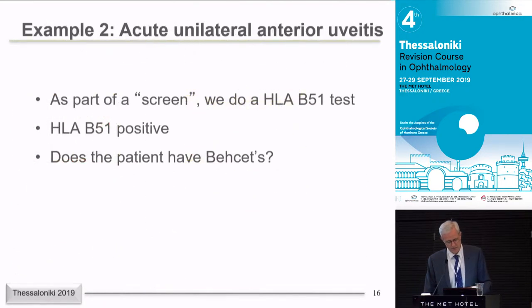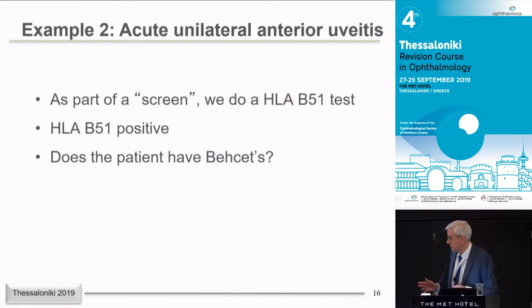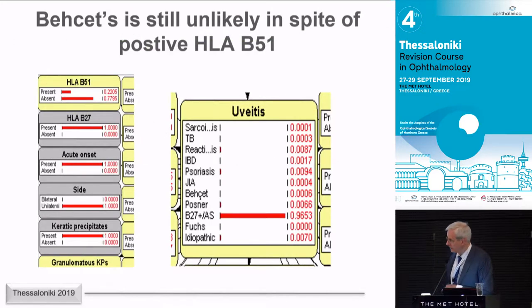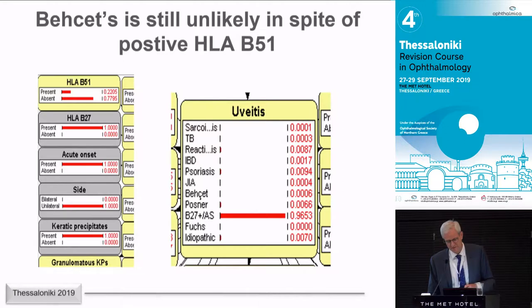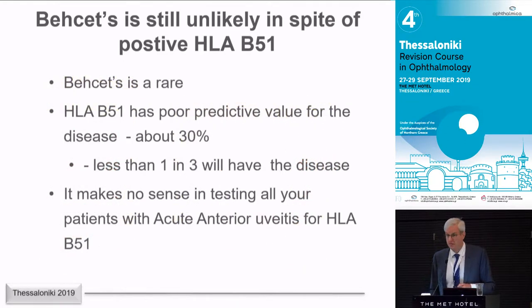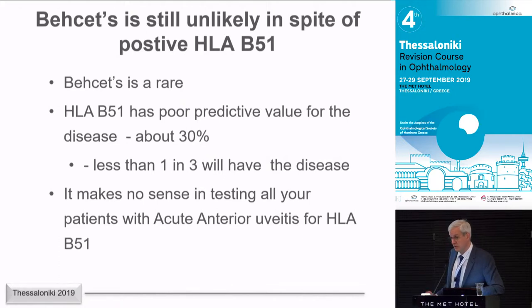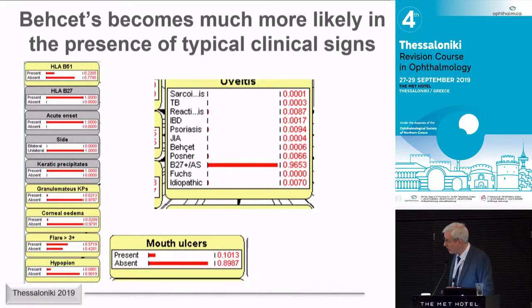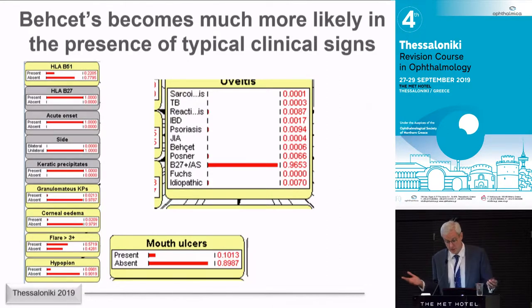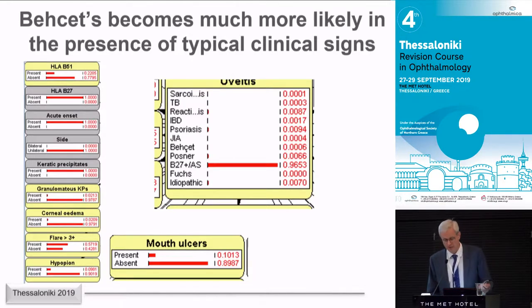Here's another example. A patient walks in with unilateral anterior uveitis — quite common in Greece. Should we do a B51 screen for Behçet's? Well, if you look at the mathematics, the likelihood of it being Behçet's is quite low just walking through the door. The B51 test is actually quite poorly predictive — sensitivity is about 70%, and it varies in populations. It doesn't make sense to randomly test all your anterior uveitis patients for B51. But if you ask 'do you have mouth ulcers?' the post-question probability of Behçet's-related uveitis goes up hugely, and you should test and refer.